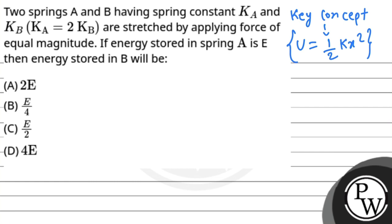Now, KA equals 2KB. This means KA upon KB is equal to 2.